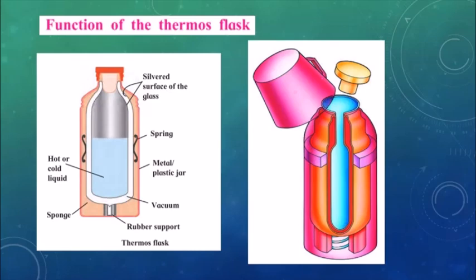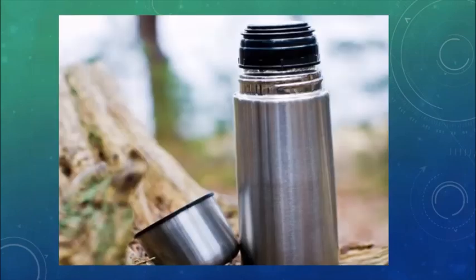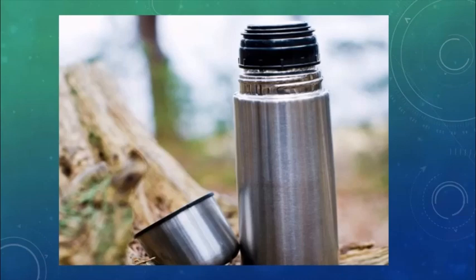Because heat is not transferred to the outer region, the thermos can retain heat for a long period. A small amount of heat is lost around the lid and through slight conduction through the glass, so hot substances may not remain hot after four to five hours — but for four to five hours they will remain hot. Thermos flasks are used to keep food, water, coffee, or tea hot or cold for a longer period of time.